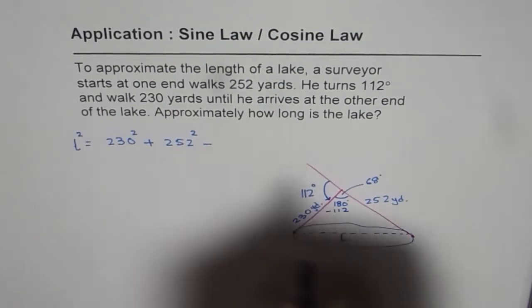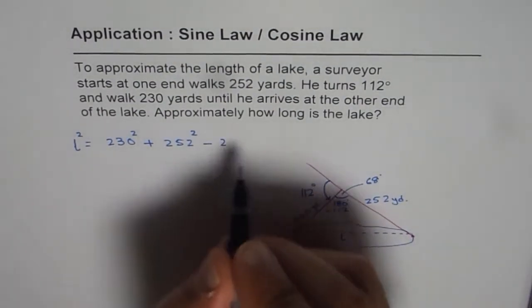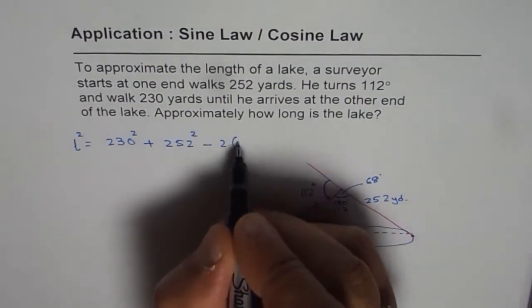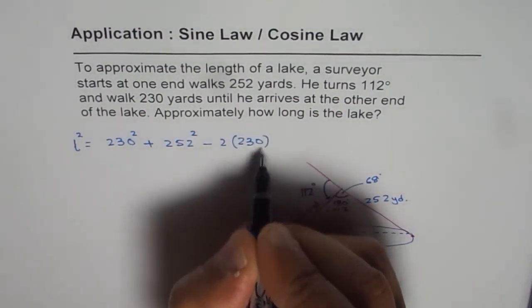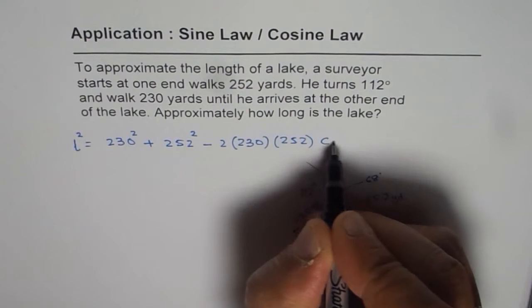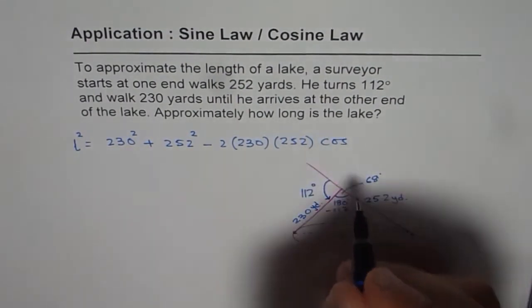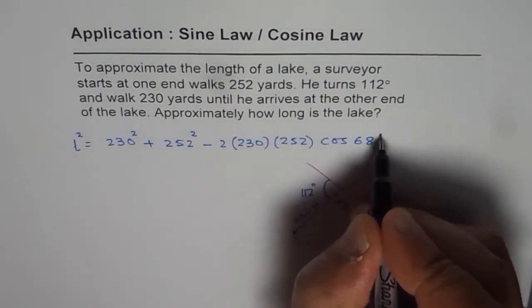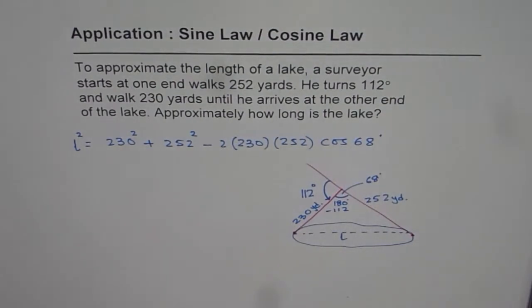L squared equals 230 squared plus 252 squared minus 2 times 230 times 252 times cosine of 68 degrees. From the cosine law, we can find L squared. Let's use the calculator to find the answer.